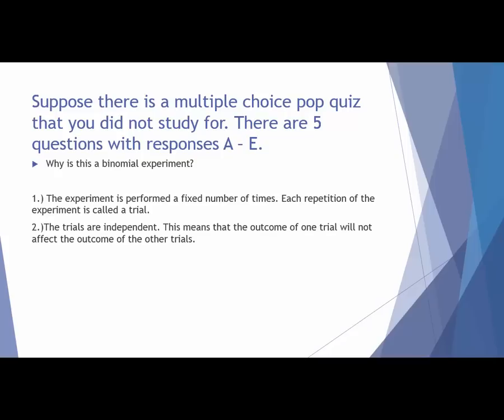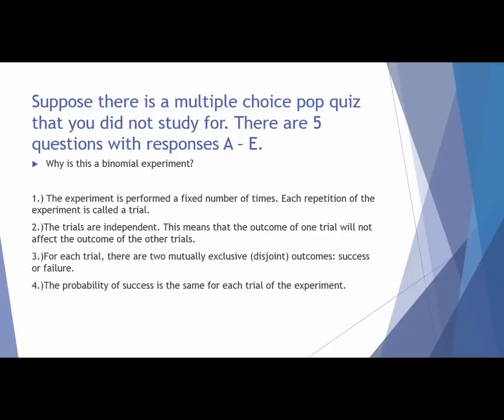The second criterion is whether your trials are independent. Every time you answer a question, that has nothing to do with the second, third, fourth, or fifth question. The third criterion is that for each trial there are two mutually exclusive outcomes — you either answer the question correctly or you do not.